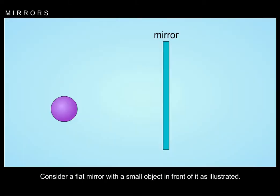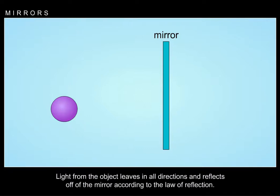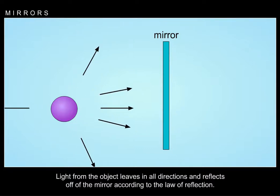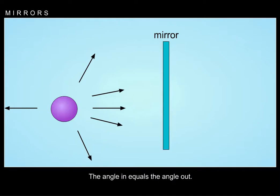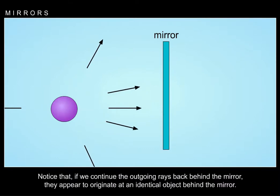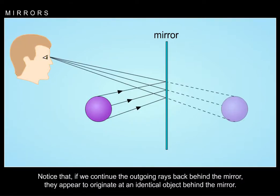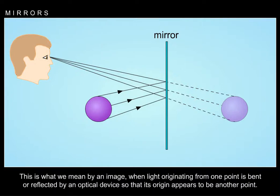Consider a flat mirror with a small object in front of it as illustrated. Light from the object leaves in all directions and reflects off the mirror according to the law of reflection — the angle in equals the angle out. If we continue the outgoing rays back behind the mirror, they appear to originate at an identical object behind the mirror. This is what we mean by an image: when light originating from one point is bent or reflected by an optical device so that its origin appears to be another point.